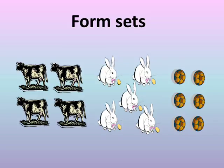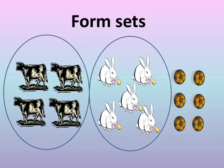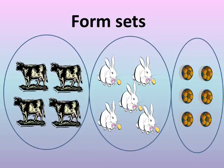Form sets means make a circle around the set. Make a circle around the cows. Make a circle around the rabbits. Make a circle around the bulls.